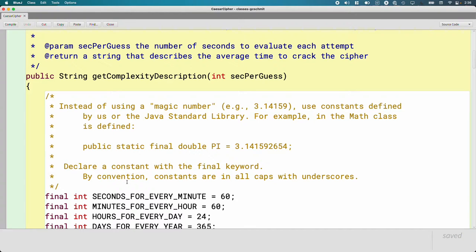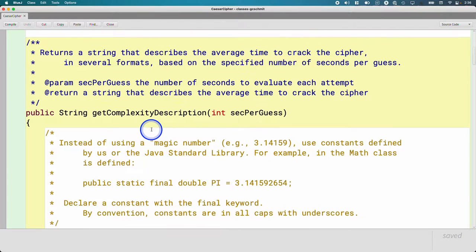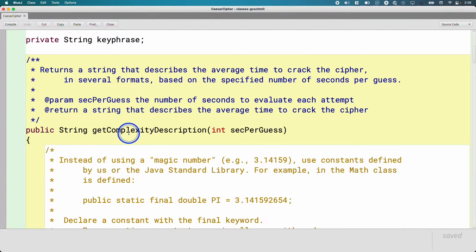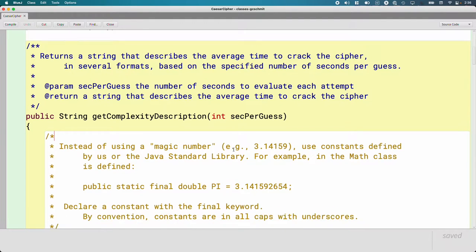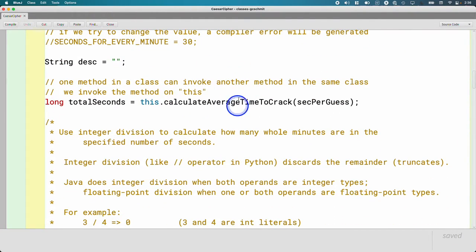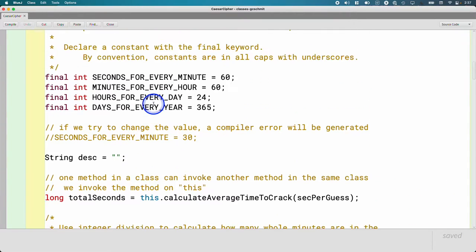It's more than a couple of days due to the weekend since we've looked at this method. So just to kind of reset what we're working on here, we're in the process of, and today we will finish, the getComplexityDescription method. This method takes a single parameter, which is how many seconds it takes to evaluate a guest key phrase and try to break our cipher.